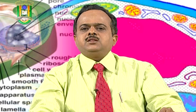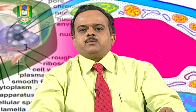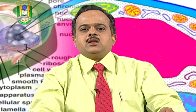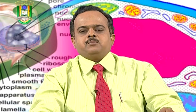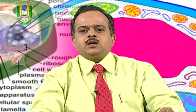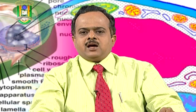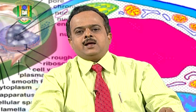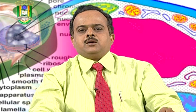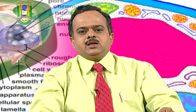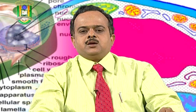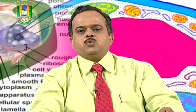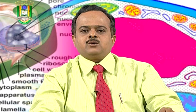خلوی دیوار کے نچلے جانب پلاسما جھلی پائی جاتی ہے۔ پلاسما جھلی لپڈز اور پروٹین سے بنی ہوتی ہے یعنی یہ لچکدار ہوتی ہے اور شحمیات اور لحمیات سے بنی ہوتی ہے۔ پلاسما جھلی کے مختلف نمونے ہیں اور آپ کے سلیبس میں صرف دو نمونے شامل کیے گئے ہیں۔